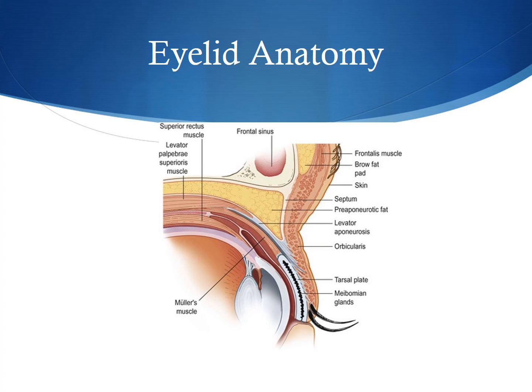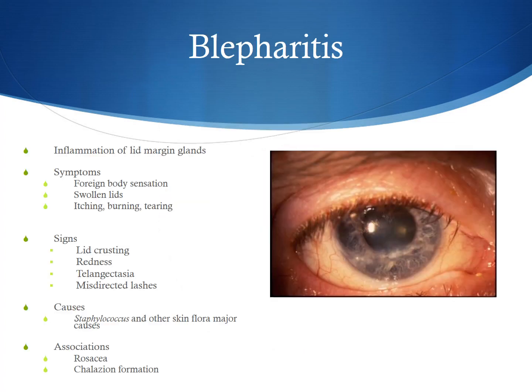Also, look where the septum is and how it separates the eyelid skin from the orbital contents. Also, something you want to note is that the conjunctiva, which lines the surface of the eyeball, also lines the surface of the inside of the eyelid, which is why many eyelid conditions can cause a secondary red eye.